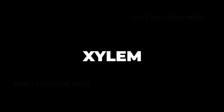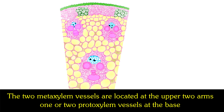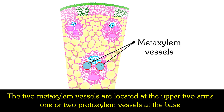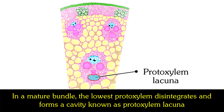What are xylem vessels? Xylem vessels are arranged in the form of the letter Y. The two metaxylem vessels are located at the upper two arms, and one or two protoxylem vessels at the base. In a mature bundle, the lowest protoxylem disintegrates and forms a cavity known as protoxylem lacuna.